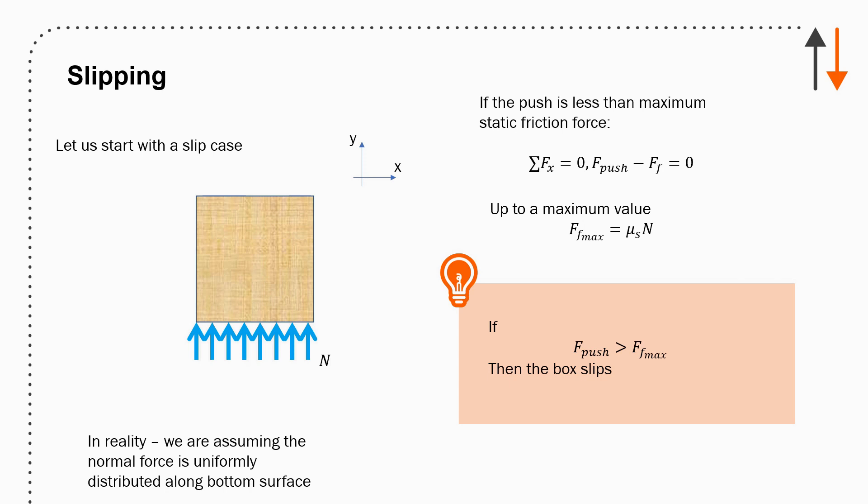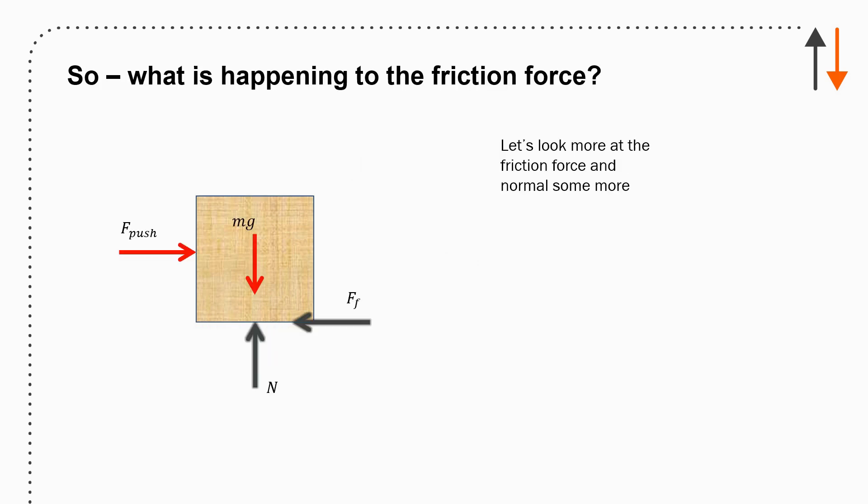In reality, what we're assuming for the normal force is it's actually uniformly distributed along that bottom surface. So it's not a point force like I've shown it in all the free body diagrams, but it looks like that. The drawings that we use make sense because it's easier to just say here's one big arrow instead of writing 20 little arrows. So the normal force acts uniformly along the bottom and everything is great. So let's take a little bit more of a look at that friction force and the normal and see what happens.